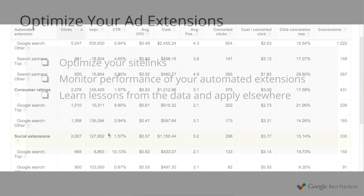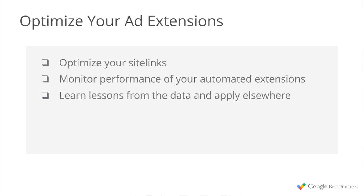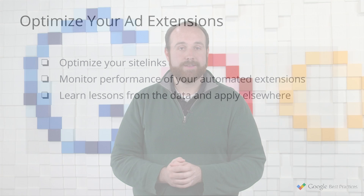So to recap, there are a couple of really helpful reports to help you understand the performance of your extensions along with your users overall. Because if they like certain extensions, that can tell you something else that you can apply elsewhere in your account. First, optimize your sitelinks — see what's showing, see what isn't, see what's driving engagement, and learn some lessons from that. Finally, you can monitor performance of your automated extensions as well and see what's actually driving engagement. Thanks so much for watching today, and please check out the rest of the videos in our series.